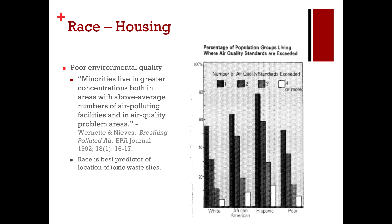What impact does that have? Minorities live in greater concentrations both in areas with above-average numbers of air-polluting facilities and in areas with air quality problems. Race is currently the best predictor of the location of toxic waste sites. It has also been identified that many corporations that tend to pollute look at the racial distribution of communities before choosing where to locate, and are more likely to locate in areas of concentrated minority populations as well as overall poor populations.